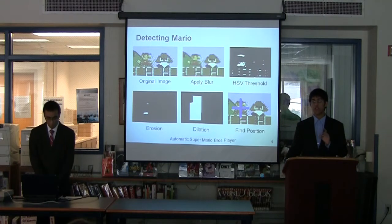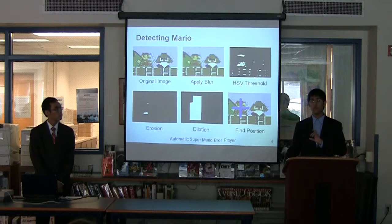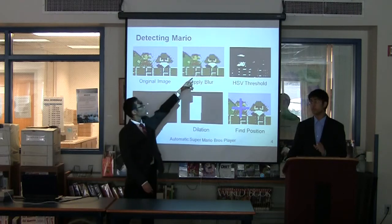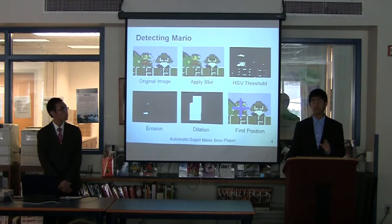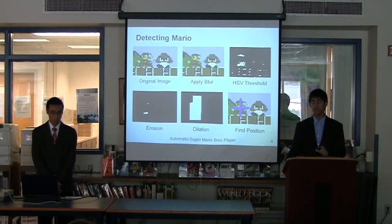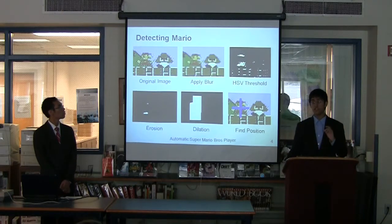We then began to track Mario on the game screen. We first applied a slight blur to reduce the video noise, and then we scaled the image to speed up the program. After the blur, we used HSV thresholding. HSV stands for hue, saturation, value. Each pixel on the screen can be defined by HSV. In thresholding, we searched for a pixel that matched the range of the color we were looking for. To track Mario, we searched for the red on his hat and the red on his overalls.